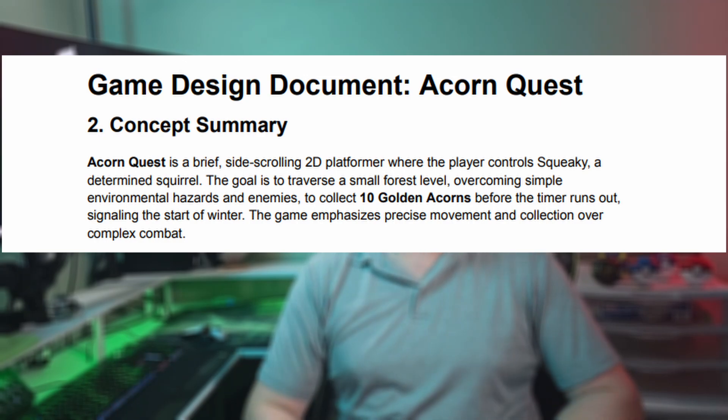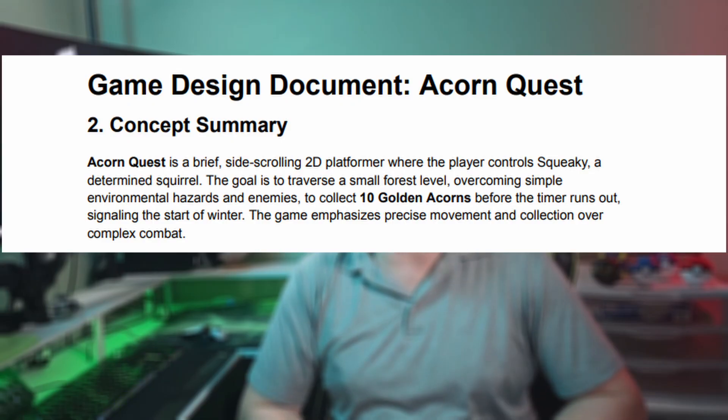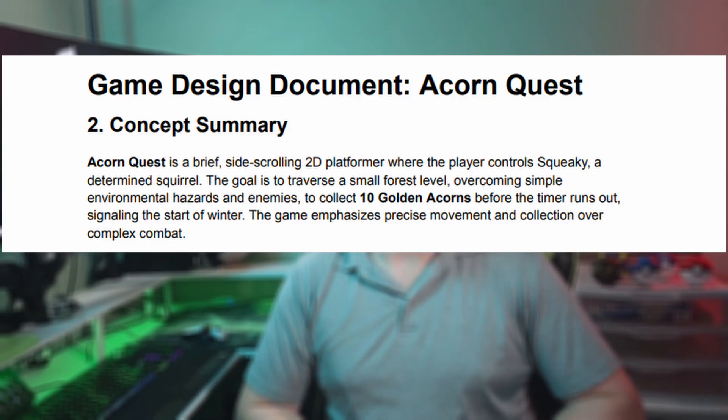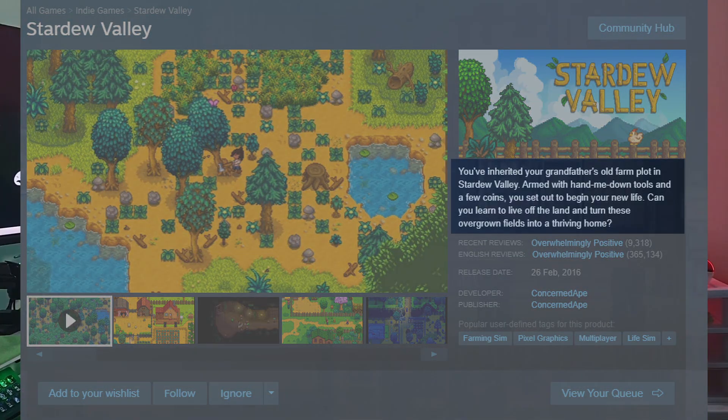Next, we have the concept summary — kind of like that elevator pitch. This should be just a couple of sentences about what your game is about. The summary for Acorn Quest is: a brief side-scrolling 2D platformer where players control Squeaky, a determined squirrel. The goal is to traverse a small forest level to collect 10 golden acorns before time runs out. Notice how that one paragraph immediately conveys the character, genre, and objective. Your summary should not be a page long — think of it like your Steam description that convinces players to buy and play your game.